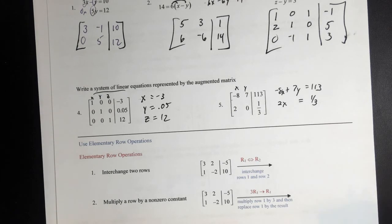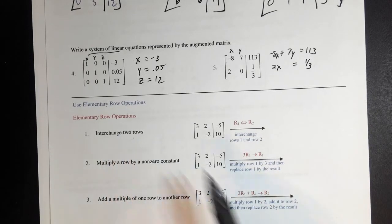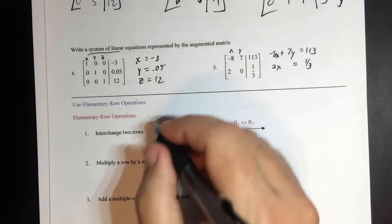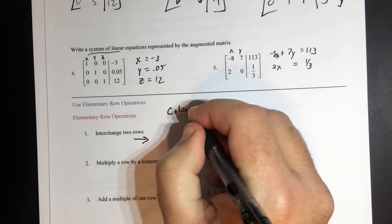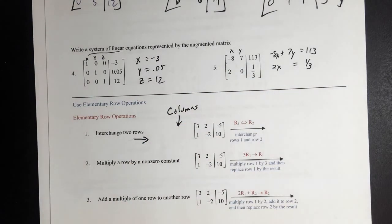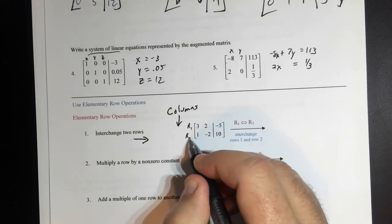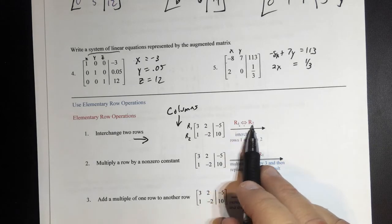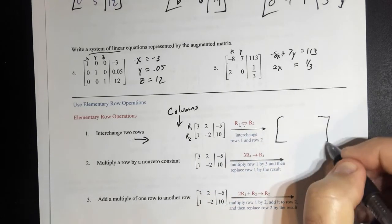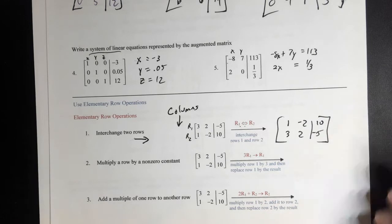So, being able to do row operations — there are a couple of ways I can do row operations. One, I can interchange the rows. Rows are this way; columns are this way. So I can interchange rows — if this is row 1 and this is row 2, this symbol means switch R1 and R2 together. And if I do that, the bottom row comes to the top, the top row goes to the bottom. Simple as that.